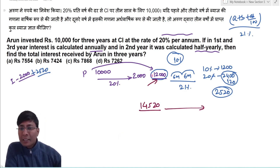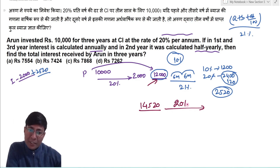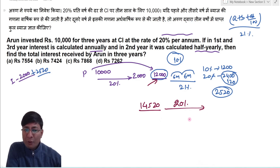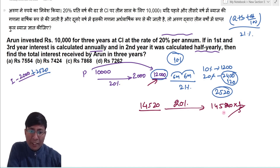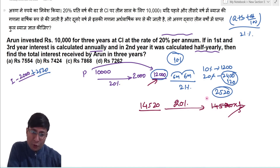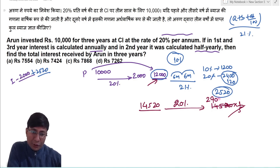In the third year, interest is calculated annually at 20%. 20% of 14,520 is one upon five. So 14,520 divided by 5 gives 2,904.